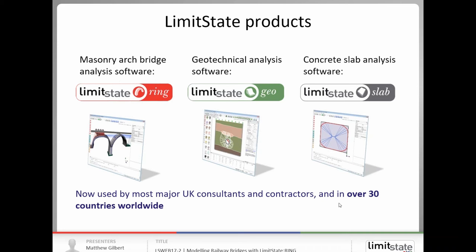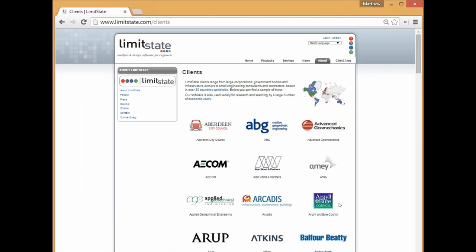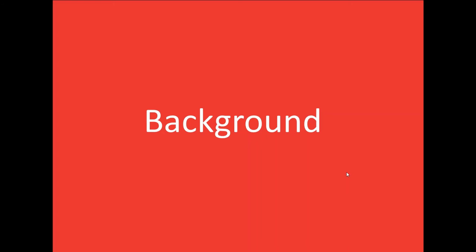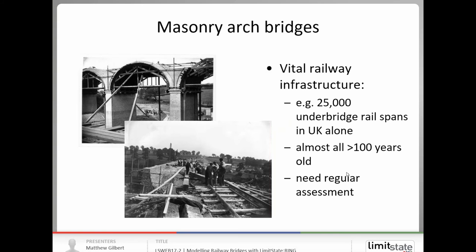So those are the three tools that are available at the present time, the limit state ring, geo and slab for bridges, masonry bridges, geotechnical applications and slab applications. And those tools are now widely used in many countries worldwide. I'll just give you a quick flavour of the kinds of companies that are using it. This is an A to Z of existing customers from a year or two ago. So you can see some big names in there, AECOM, AIME, Arup, Atkins and so on.